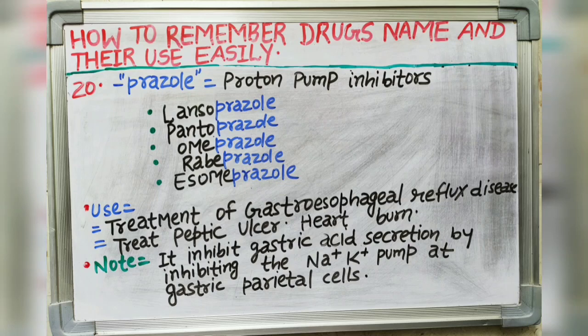Next suffix is -prazole. Prazole indicates proton pump inhibitors. Drugs like lansoprazole, pantoprazole, omeprazole, rabeprazole and esomeprazole all end with the -prazole suffix. It is used in treatment of gastroesophageal reflux disease, peptic ulcer disease and heartburn. It inhibits gastric acid secretion by inhibiting the proton pump at the gastric parietal cell.